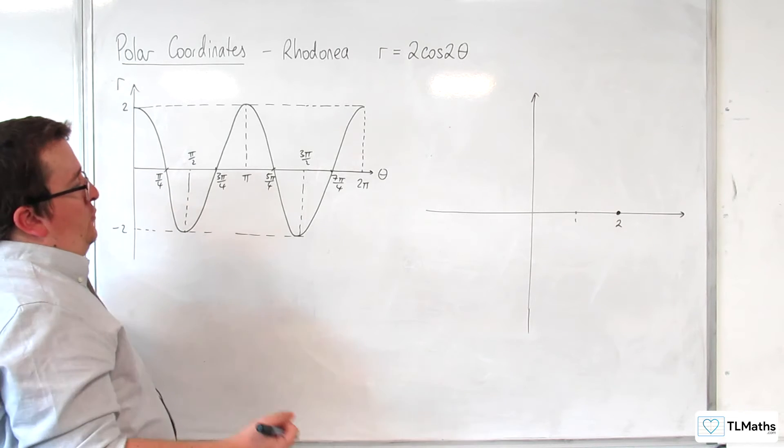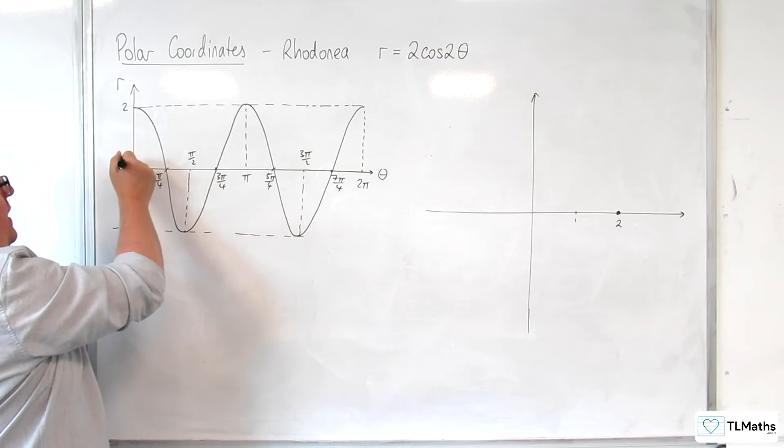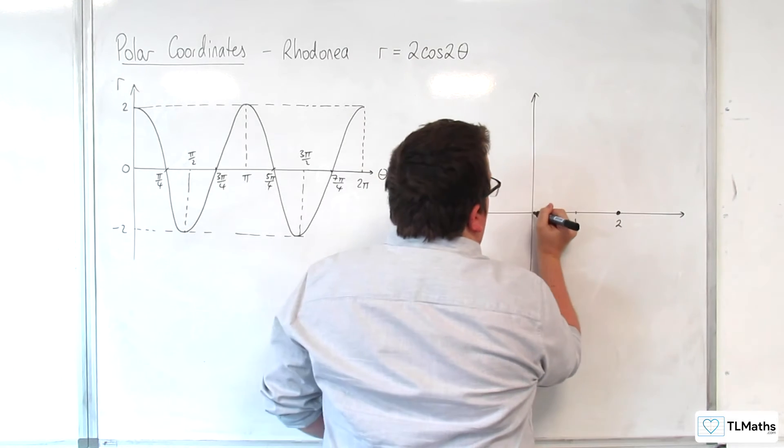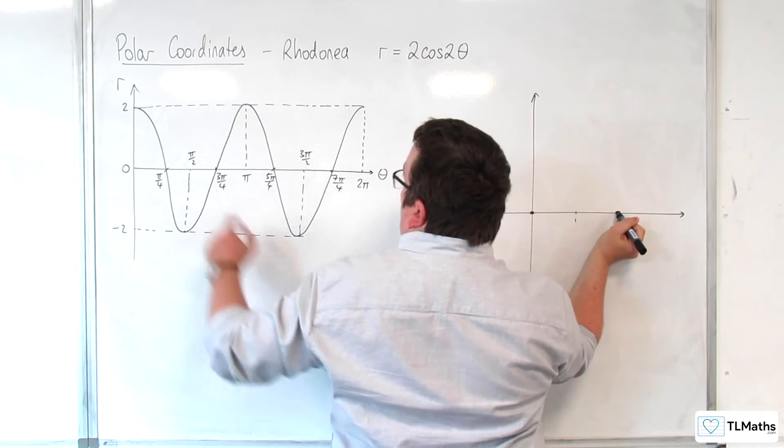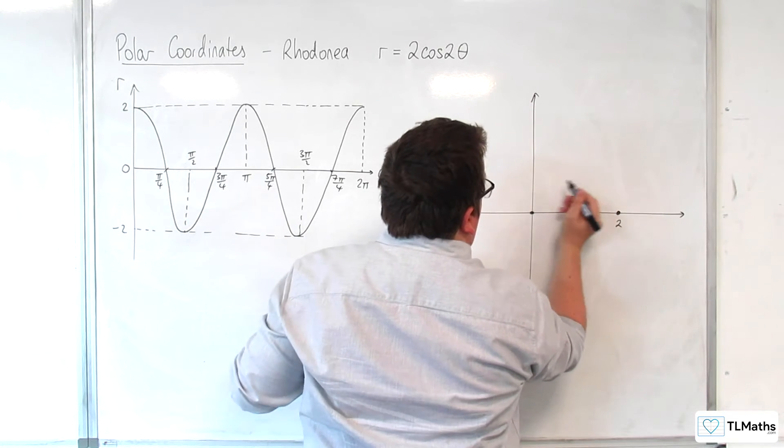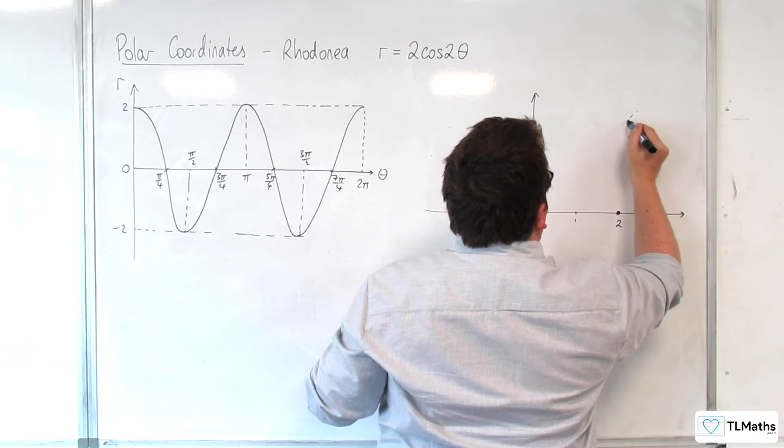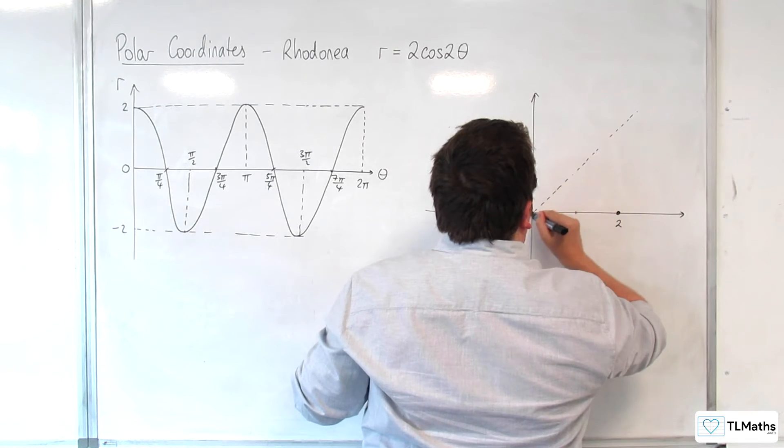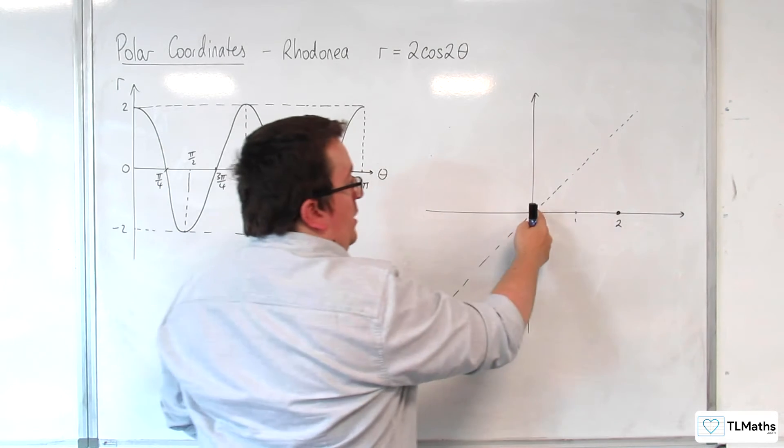As theta increases to pi over 4, we are then at r equals 0. So at this point, the curve is decreasing the value of r. And pi over 4, so let's just dash line for the moment, because that will be the angle at pi over 4.